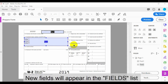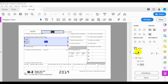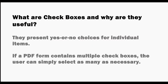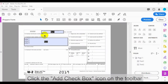New fields will appear in the fields list on the right hand side. Now let's take a closer look at Checkboxes and Export Value. Checkboxes present yes or no choices for individual items. If a PDF form contains multiple checkboxes, the user can simply select as many as necessary.